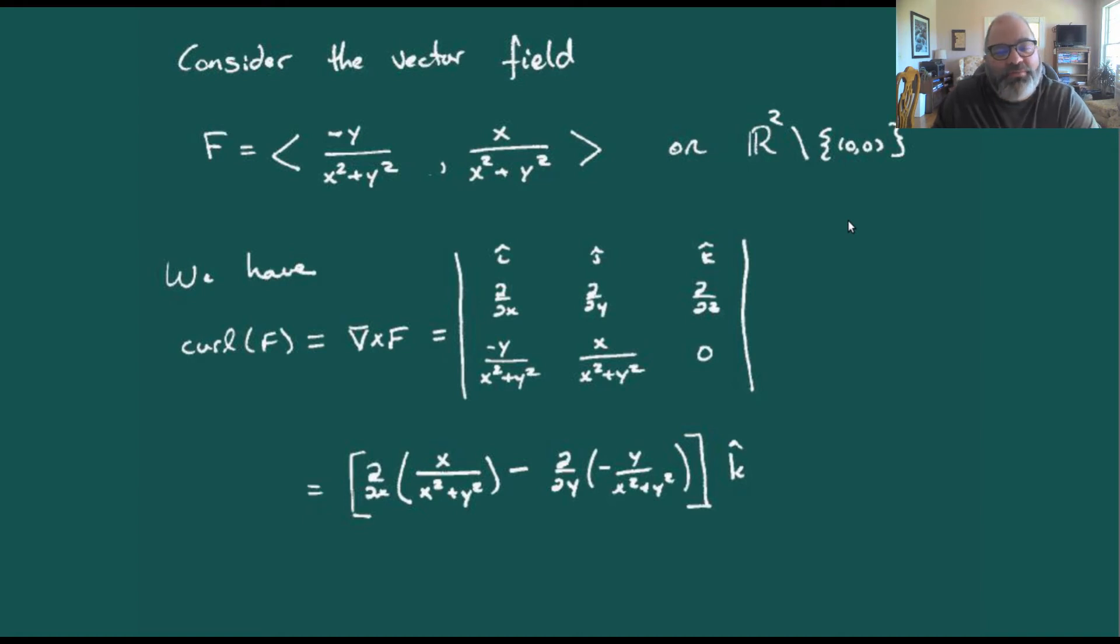We want to do this by really digging into an example. If we've got this vector field F being negative y over x squared plus y squared and x over x squared plus y squared, this thing's defined on the xy plane everywhere except at the origin.